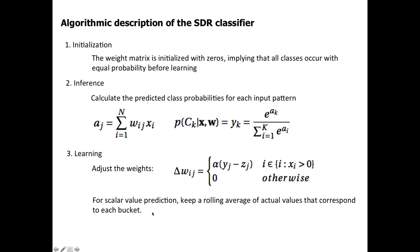Additionally, for scalar value prediction, we keep an average of actual values corresponding to each class. This is the same as in the old CLA classifier, just to make the prediction a little more accurate.